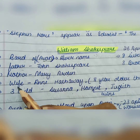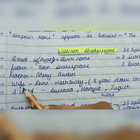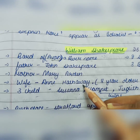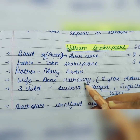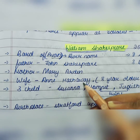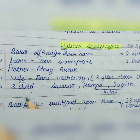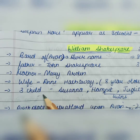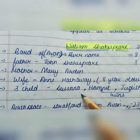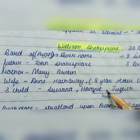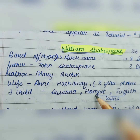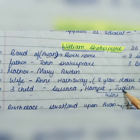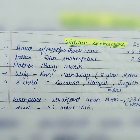The name of the wife of William Shakespeare is Anne Hathaway, and Anne Hathaway was eight years older than William Shakespeare. Shakespeare had three children: Susanna, Hamnet, and Judith. Hamnet and Judith were twins.